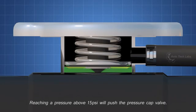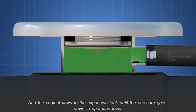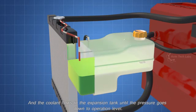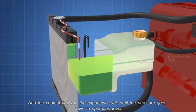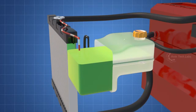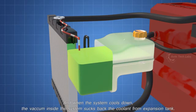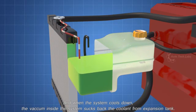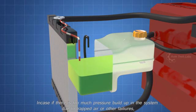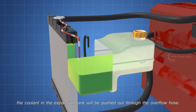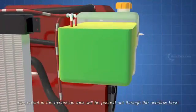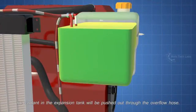Reaching a pressure above 15 PSI will push the pressure cap valve, and the coolant flows to the expansion tank until the pressure goes down to operation level. And when the system cools down, the vacuum inside the system sucks back the coolant from expansion tank. In case if there is too much pressure build up in the system due to trapped air or other failures, the coolant in the expansion tank will be pushed out through the overflow hose.